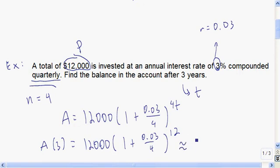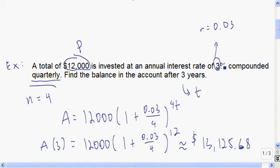Plug that into your calculator and you'll get around thirteen thousand one hundred twenty-five dollars and sixty-eight cents. That's approximately how much you'd have in the account after three years, with an interest rate of three percent divided by four and applied at the end of each quarter.